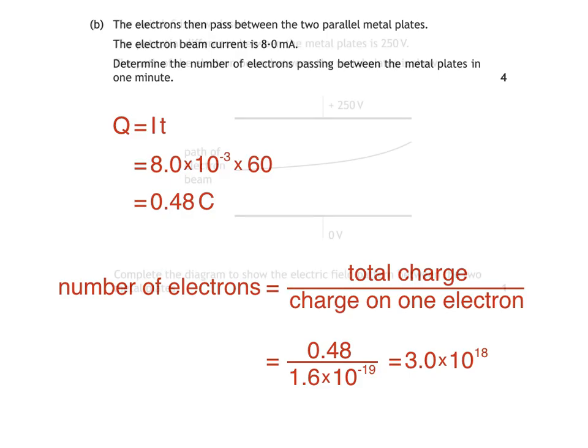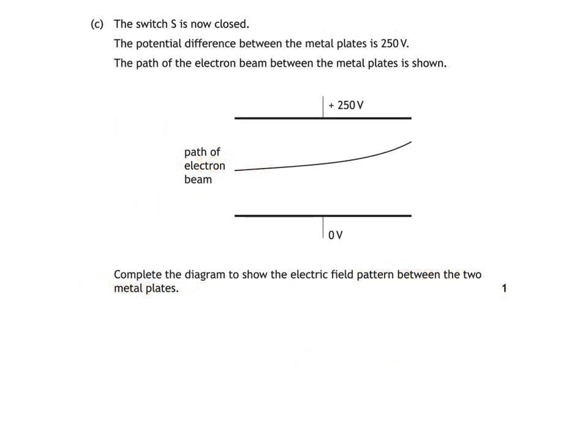Finally, this is part C. The switch S is now closed. Remember we spoke about this before. The potential difference between the metal plates is 250 volts. The path of the electron beam between the metal plates is shown. We then have to complete the diagram to show the electric field pattern between the two metal plates. And this is our answer. Remember that we'd have a uniform field between the metal plates, where electric field strength is constant. This is illustrated by having our electric field lines evenly spaced. Electric field lines indicate the direction of the force experienced by a positive test charge placed in the field. So our lines have to be drawn with arrows pointing downwards.